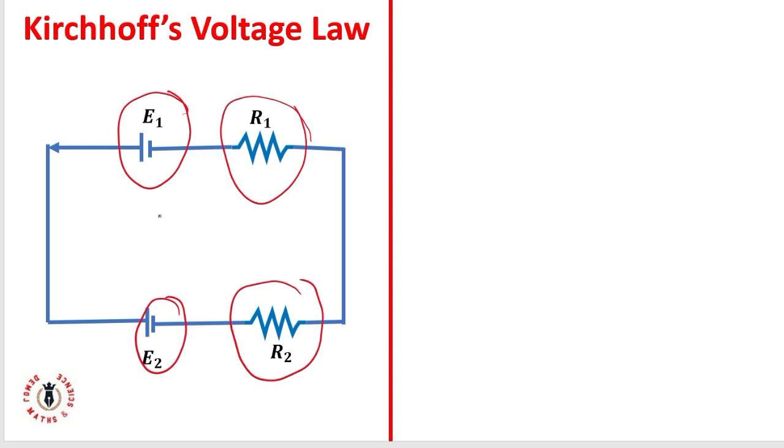The algebraic sum - if you look at this example or diagram, you see that here I have my positive, here I have my negative, here also I have my positive, here I have my negative. The voltages are in two different directions.